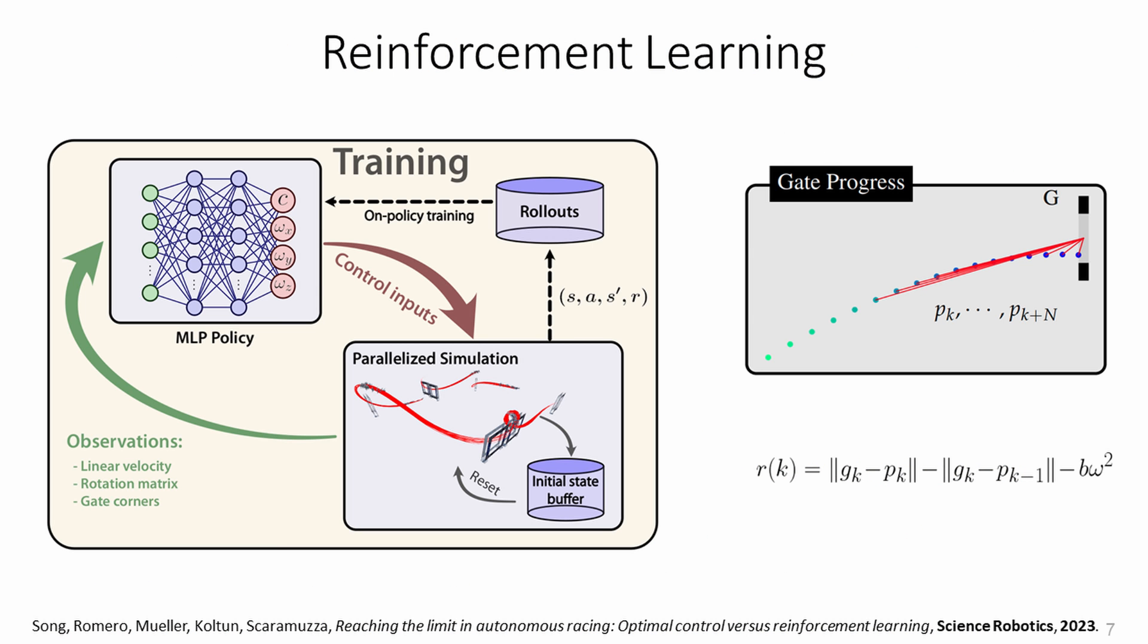On the other hand, reinforcement learning optimizes directly the task objective, specified by a reward function. In the drone racing case, the reward function consists of the gate progress reward and the body rate regularization reward. Additionally, there are negative rewards when the drone crashes against the gates.